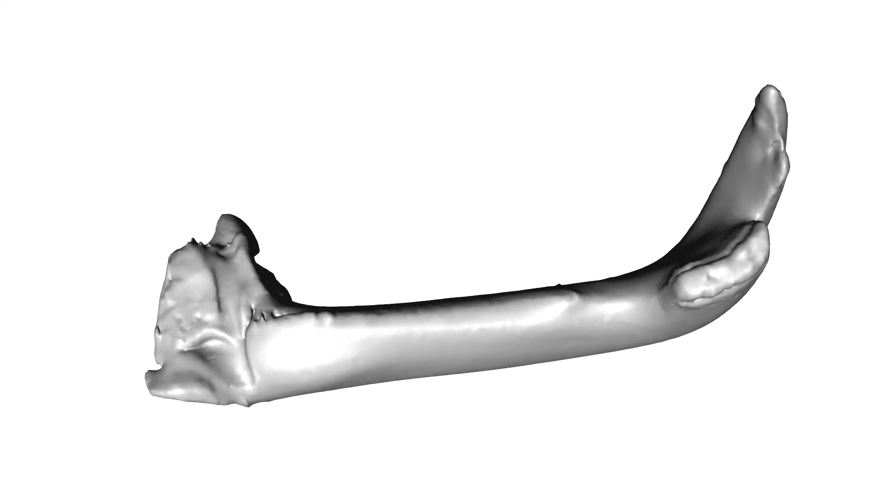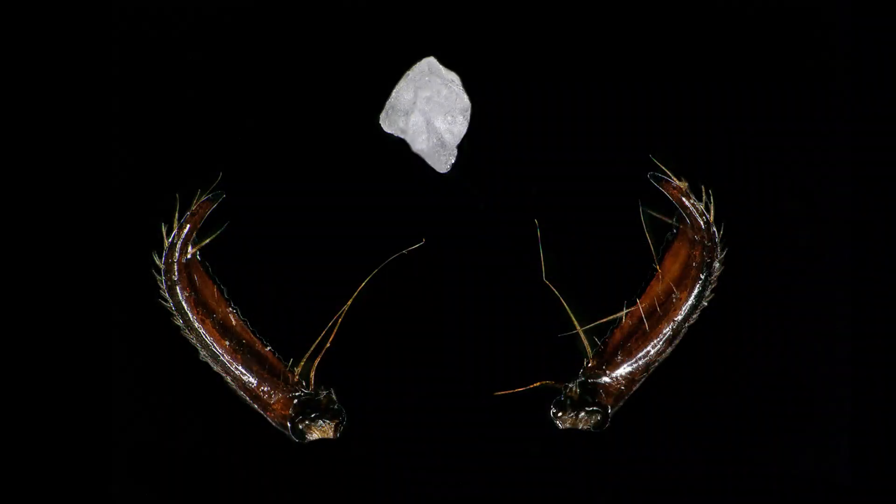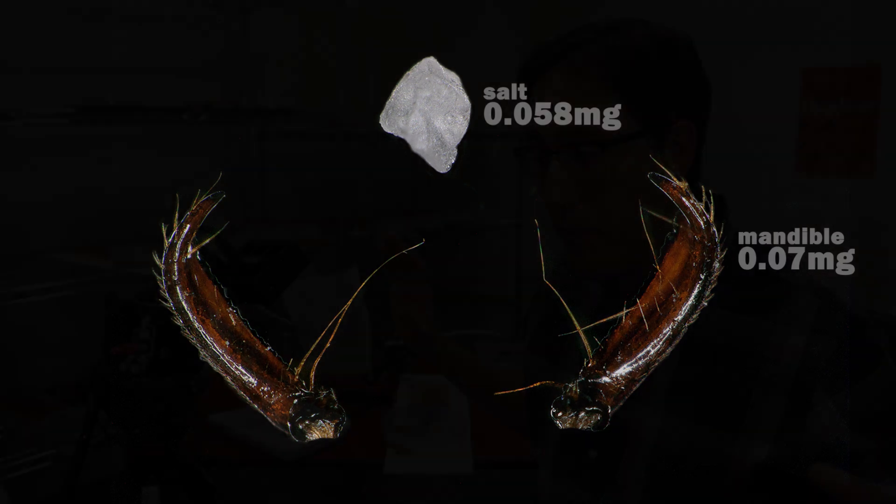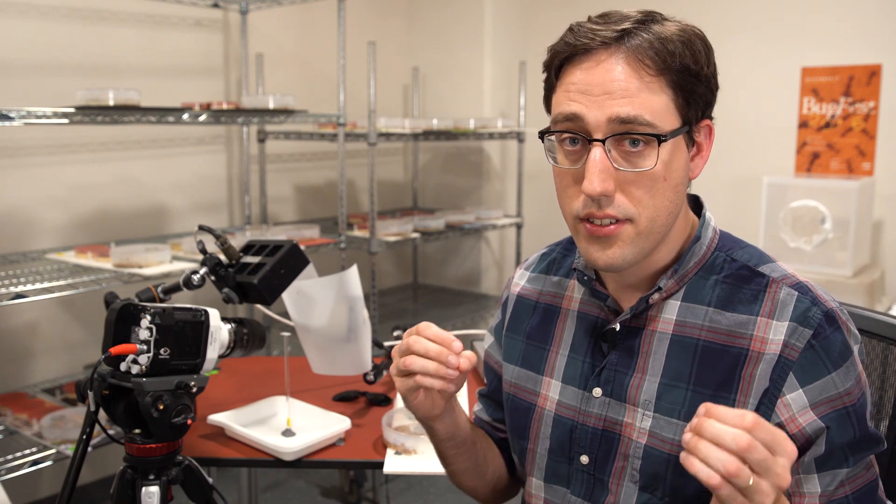Trap jaw mandibles are hollow, and the weight of a single mandible is 0.07 milligrams, which is about the weight of a single grain of salt. So in this case, even though the mandibles are being swung really quickly, their tiny mass limits how much force they can actually generate.